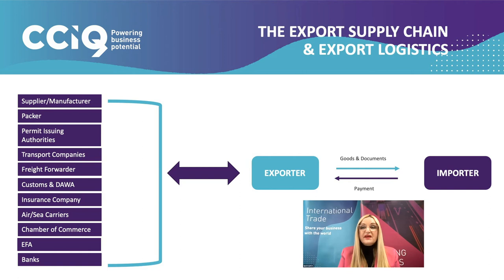Let's start with the export supply chain, with specific recognition of the significant role that chambers of commerce play. Many of you may not be aware that chambers of commerce have been issuing non-preferential certificates of origin since 1898, and more recently they have been closely working with customs authorities to issue preferential certificates of origin. The World Chamber Federation, which unites a global network of 12,000 chambers, is the author of the International Certificate of Origin Guidelines, which establishes standard procedures for issuing and attesting certificates of origin by all chambers worldwide. Another product of the World Chamber Federation is the ATA Carnet system, which allows for the duty-free and tax-free temporary import of goods across the world chamber network.